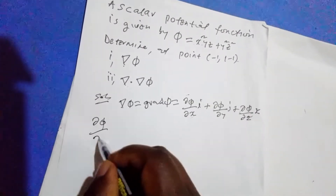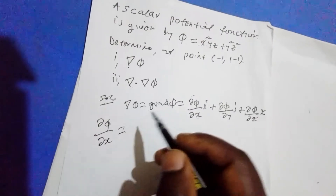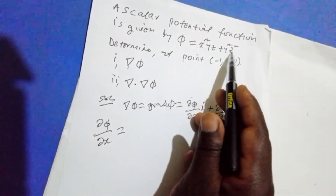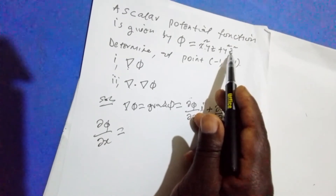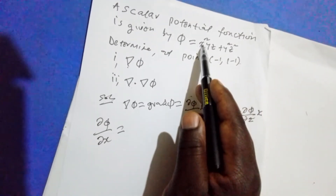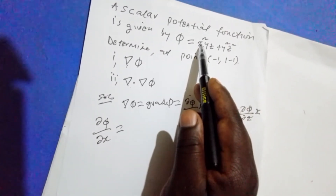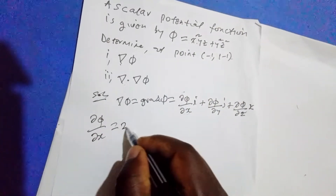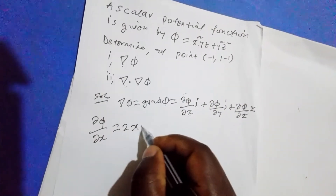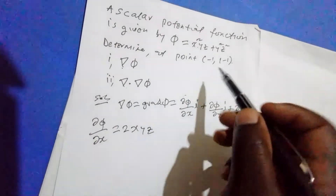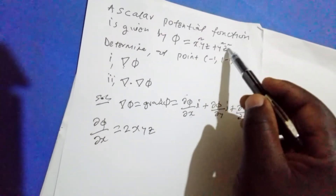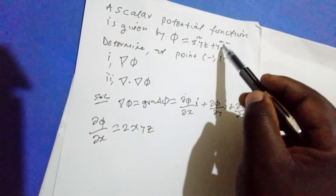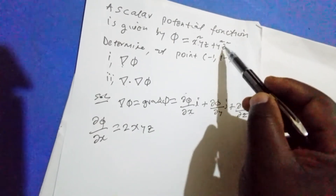Del phi del x: when you partially differentiate the expression with respect to x, when you differentiate x squared you get 2xyz. The second term has no x, so it is treated as a constant, and differentiating a constant gives 0. So del phi del x equals 2xyz.